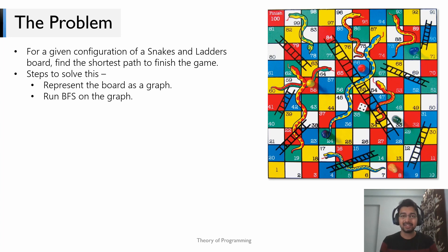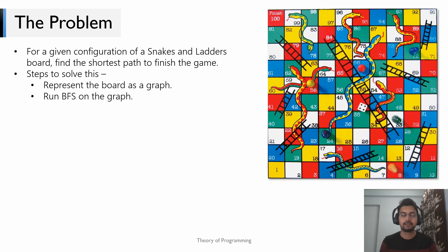It is actually pretty simple to do this. We will do this in two simple steps. Firstly, we will represent this given configuration of snakes and ladders in the form of a graph — that is, we are going to represent this snakes and ladders game board as a bunch of edges and vertices. In the second step we simply run BFS on this graph. If you're not familiar with breadth first search algorithm, I recommend you to watch my video on breadth first search.